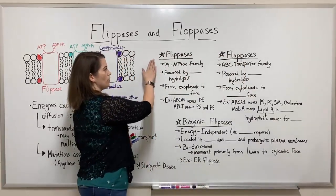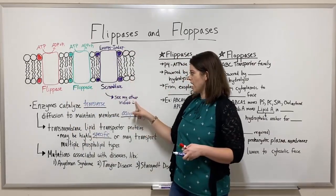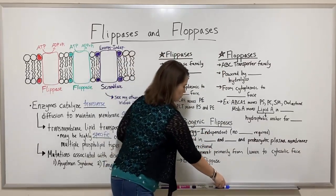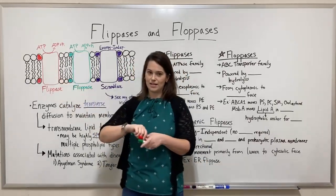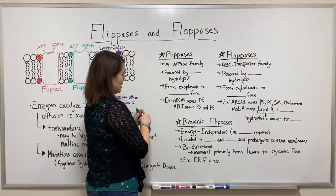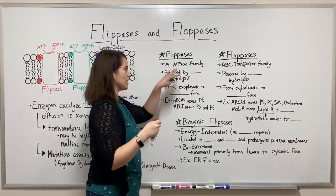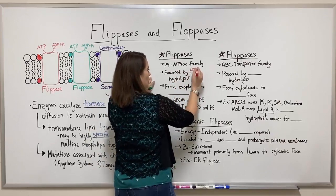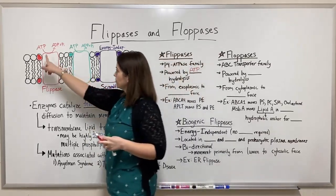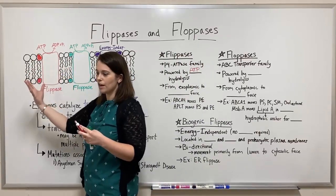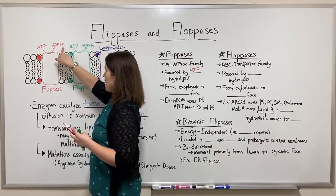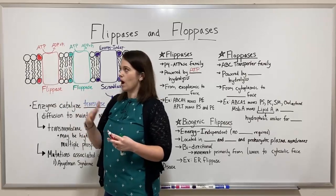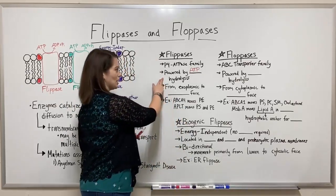Now let's focus on flipases and flopases — I'll have another video on scramblases, so check that out. Flipases are P4 ATPases, part of this family of proteins. They are powered by ATP hydrolysis. ATP has to be used and hydrolyzed — that terminal third phosphate group gets pulled off, a bond is broken that releases energy, and it's that energy the flipase uses to drive its process.